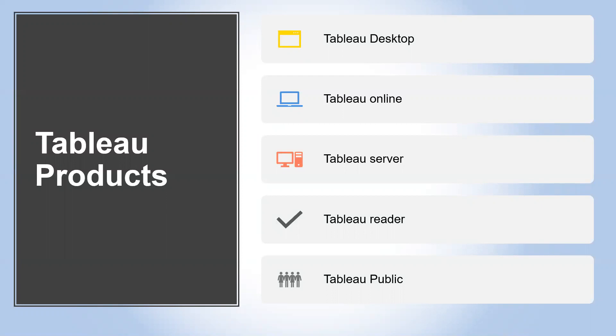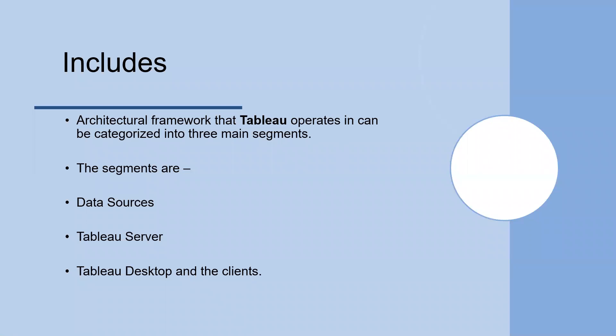Now, what does Tableau architecture include? It is divided into three segments: data sources, Tableau server, and then Tableau desktop and the clients. If you remember ETL — extraction, transformation, and loading — the flow here is similarly: data sources, into Tableau server, and then Tableau desktop and the clients.